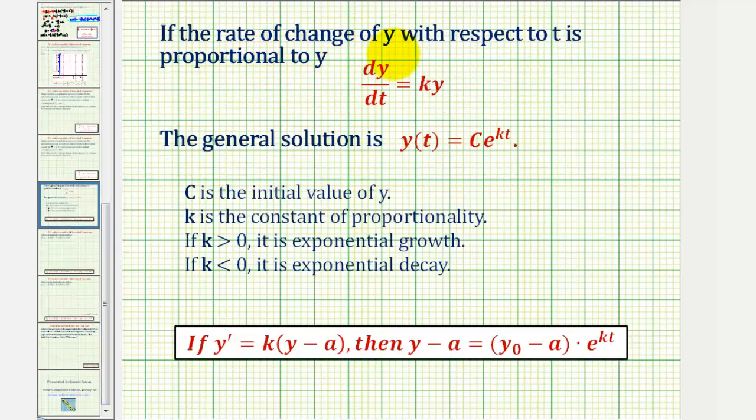We discovered that if the rate of change of y with respect to t is proportional to y, meaning dy/dt is equal to a constant k times the function y of t, then the general solution is y(t) equals c times e raised to the power of kt. Or again, k is this constant here. And we also discovered that c is the initial value of y or y(0).